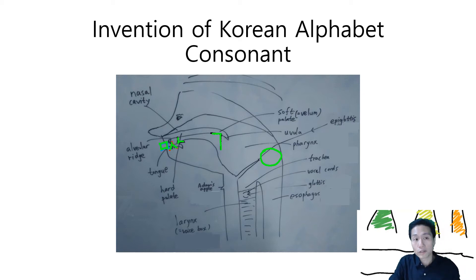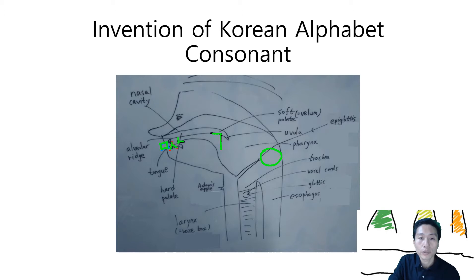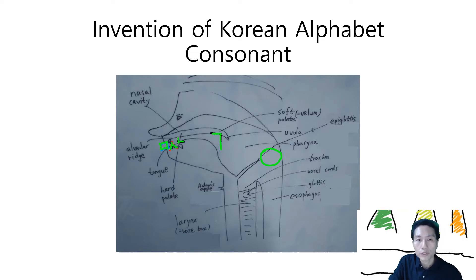Hello, today we learn about the invention of the Korean alphabet, especially consonants. As you might already know, King Sejong created the Korean alphabet in 1443. He created it because he felt sorry for the common people, who couldn't use Chinese loanwords the way high officials could, so King Sejong created the Korean alphabet.